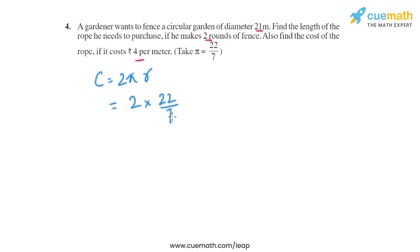The diameter of the circle is given as 21 meters, and we know radius equals diameter by 2, so it will be 21/2. When we solve it, we will get 66 meters.